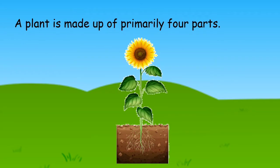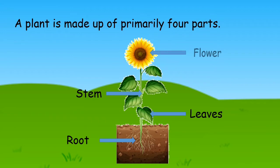A plant is made up of primary four parts: the root, stem, leaves, and flower.